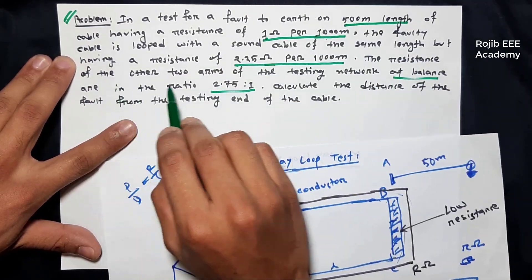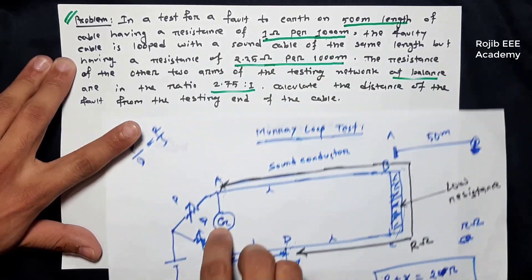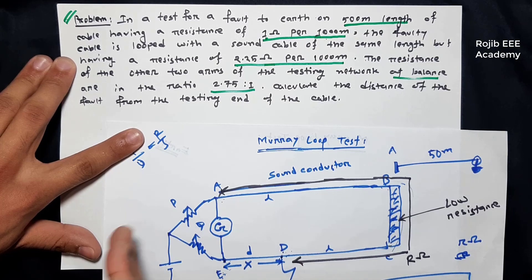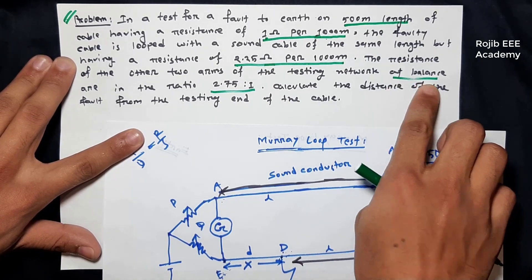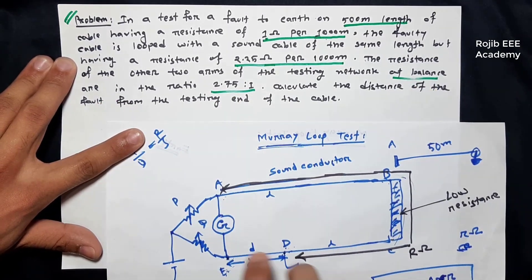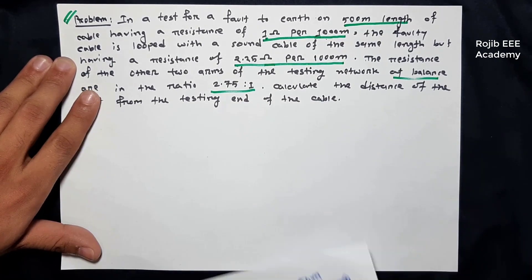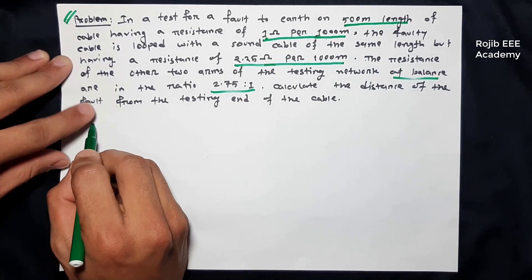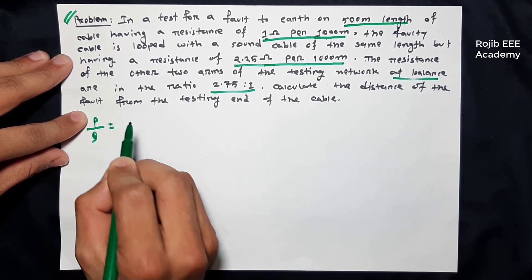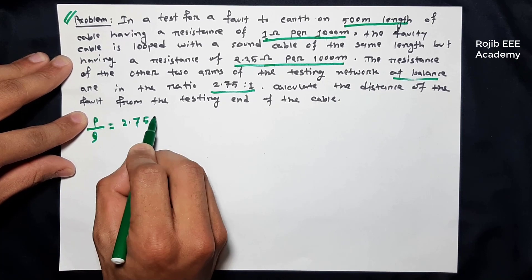The resistance of the other two arms of the testing network at balance R in the ratio of atom — that means P by Q ratio. The other arms have come from the other two arms. P by Q is equal to 2.75 to 1.